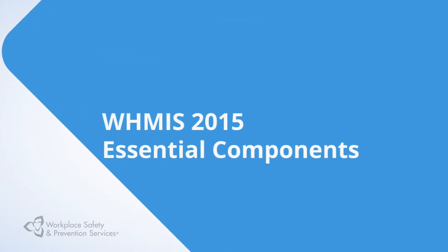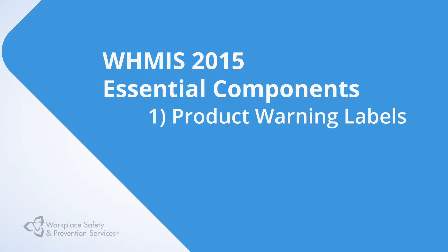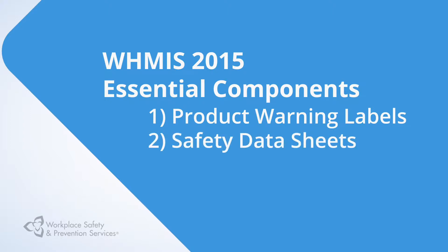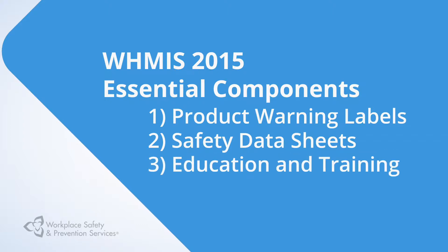There are three essential components to WHMIS 2015 to protect workers from chemical hazards. One: product warning labels that come on containers, which include pictograms and other important information about specific hazardous materials. Two: safety data sheets that offer detailed information on hazardous materials as well as preventive and first aid measures. Three: employee education and training to teach the safe use, storage, and disposal of hazardous products.